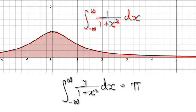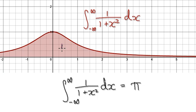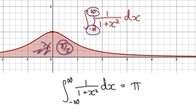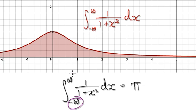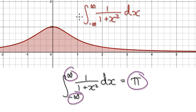So what we have done is: if you integrate from zero all the way to infinity, this area will be pi over two. Now multiply this by two to get the whole area from negative infinity to infinity. Multiplying by two gives us the final answer: the whole area here is actually pi.